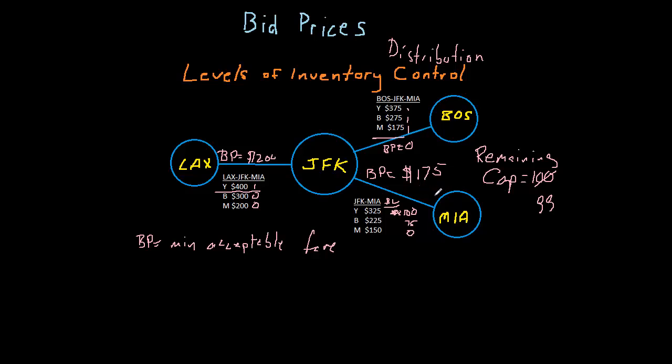In other words, we had an expectation. We had calculated an expected value of $175 for that seat. We would not accept less than $175 because we had some likelihood, some expectation, that if we didn't sell the seat today and saved it for a future customer, then we would get, on average, $175.